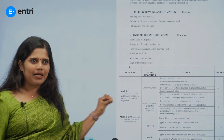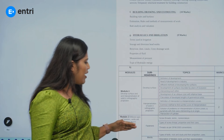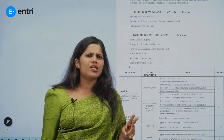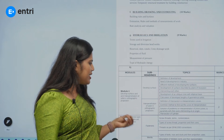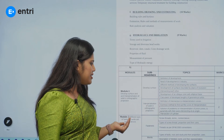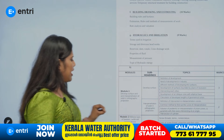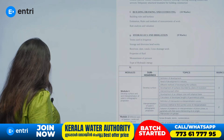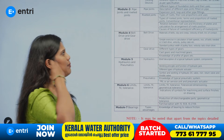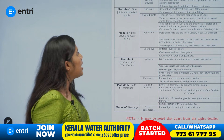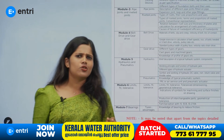Engineering graphics is a paper based on engineering. Fasteners, welds, and locking devices: fasteners are 3 marks and welds are 2-3 marks. We need to learn thread normalization — thread as per SP-46 2003, bolt, nut, and stud. Pipe joints and riveted joints are also included; the riveted joint is 3 marks. Locking devices have 3 marks with different types.